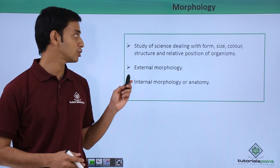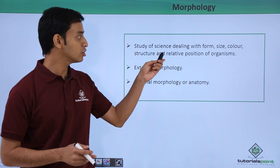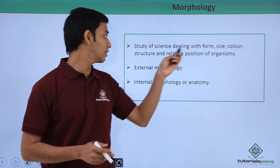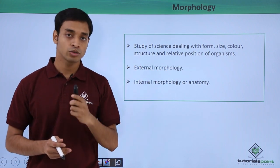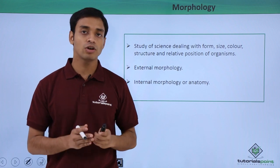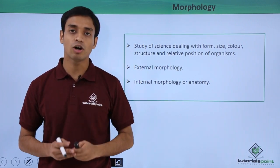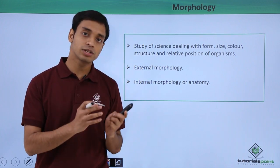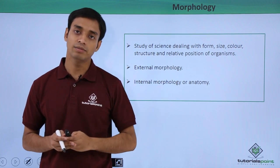Morphology is basically the science dealing with the form, size, color, structure, and relative positions of organisms. From these characteristics we can understand that morphology refers to the characteristics which we can easily observe, which we can touch and observe.